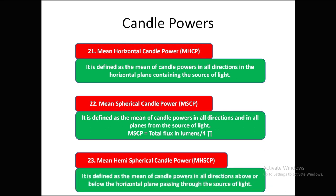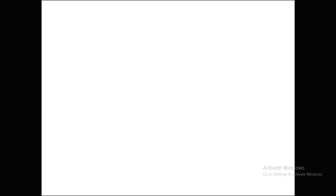Mean hemispherical candle power (MHemiCP) is the mean of candle powers in all directions either above or below the horizontal plane passing through the source. Spherical candle power takes the mean in all directions and all planes, while hemispherical candle power covers only half — either above or below the source.